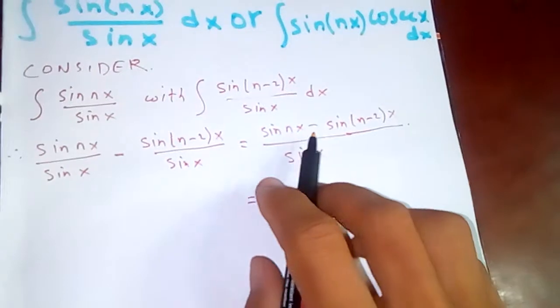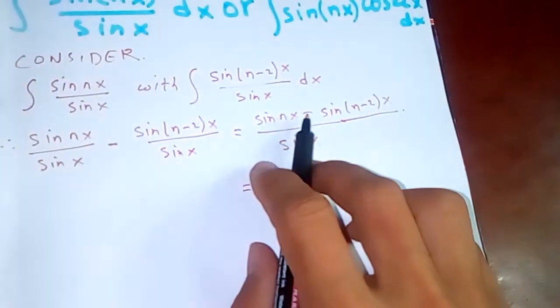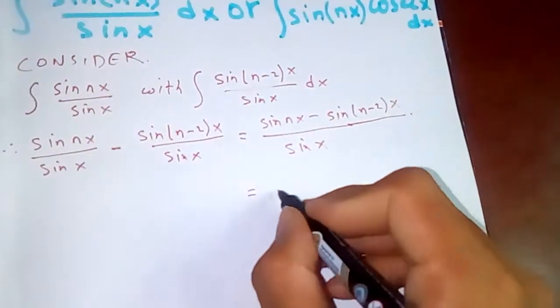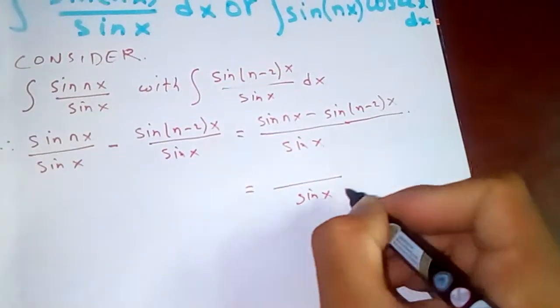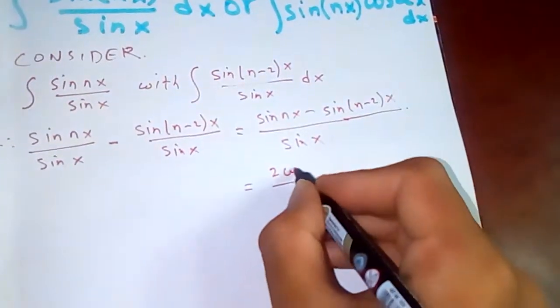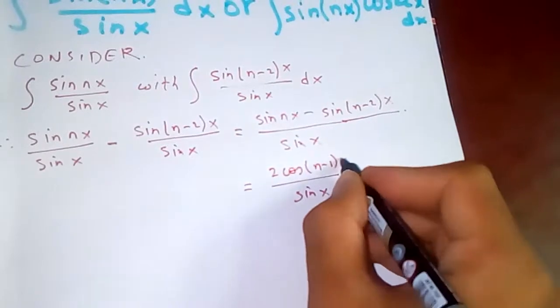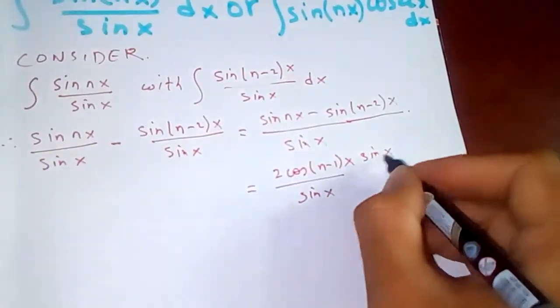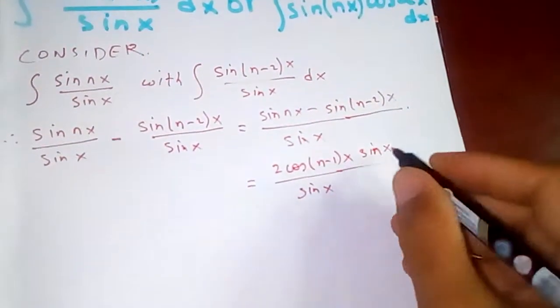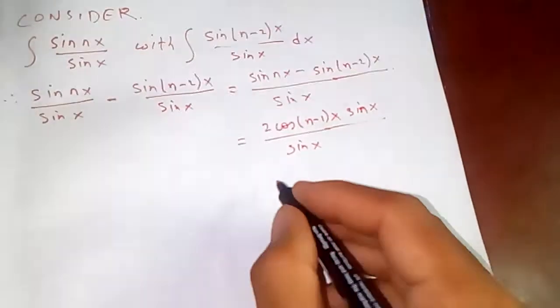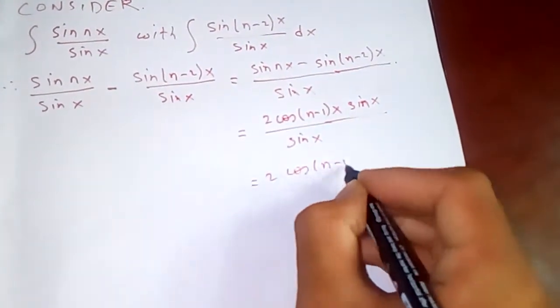Applying sin a minus sin b, what do we get? You'll get 2 cos^(n-1)x sin x. This sine and sine can get cancelled. So 2 cos^(n-1)x.